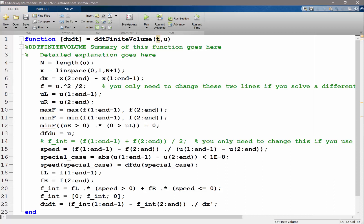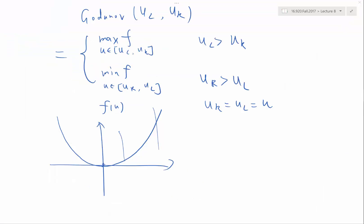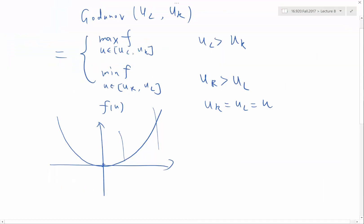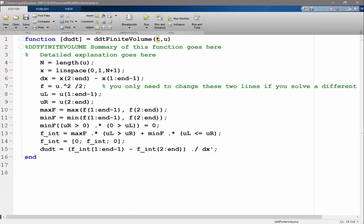So what I'll do is f interface is equal to max f times uL greater than uR plus min f times uL less or equal to uR. And everything else stays the same.